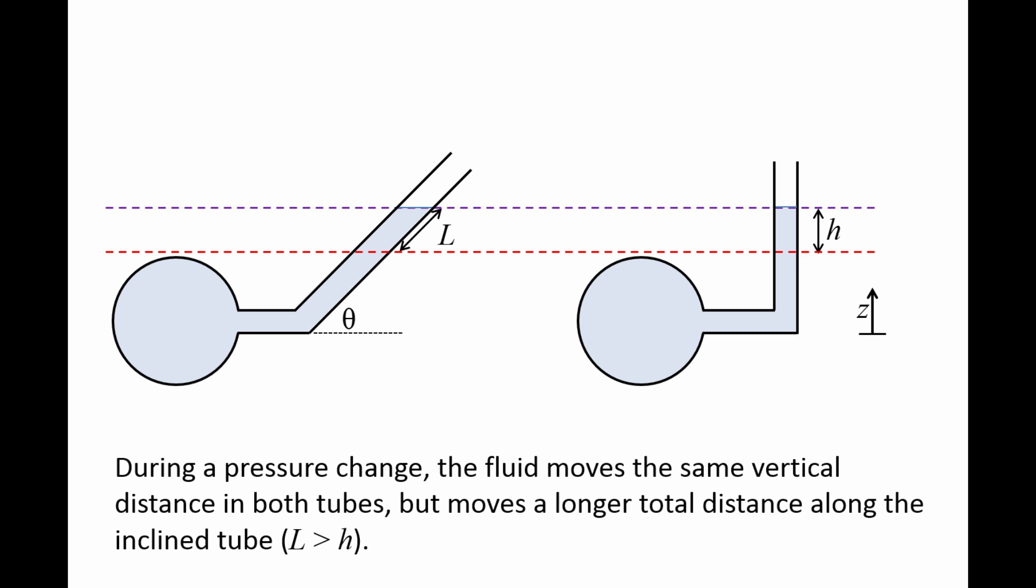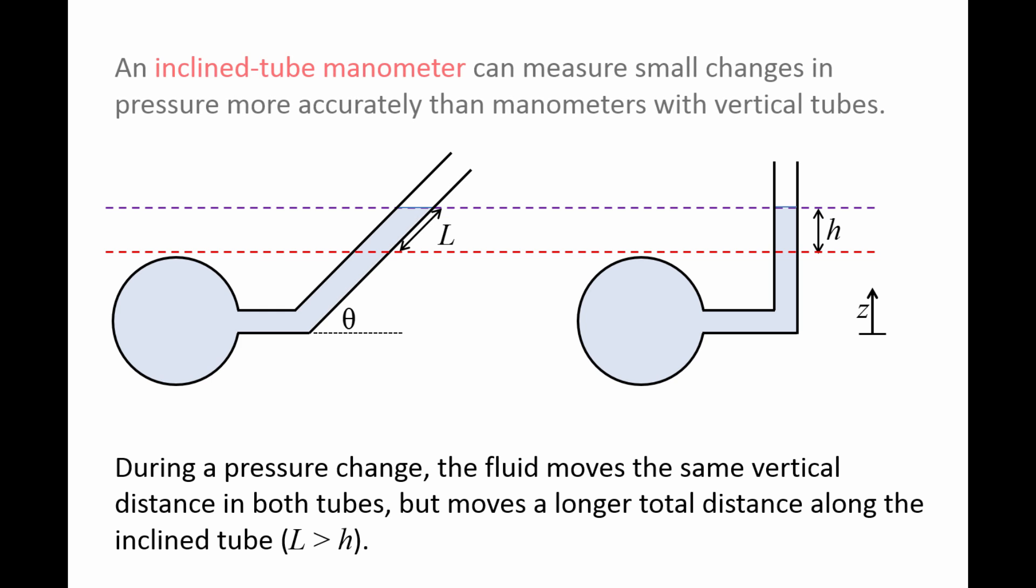So if the fluid level were initially at the red dashed line and an increase in pressure moved the fluid level to the purple line, notice that the distance L is greater than the distance H. So inclined tube manometers can measure small changes in pressure more accurately than manometers that use vertical tubes.